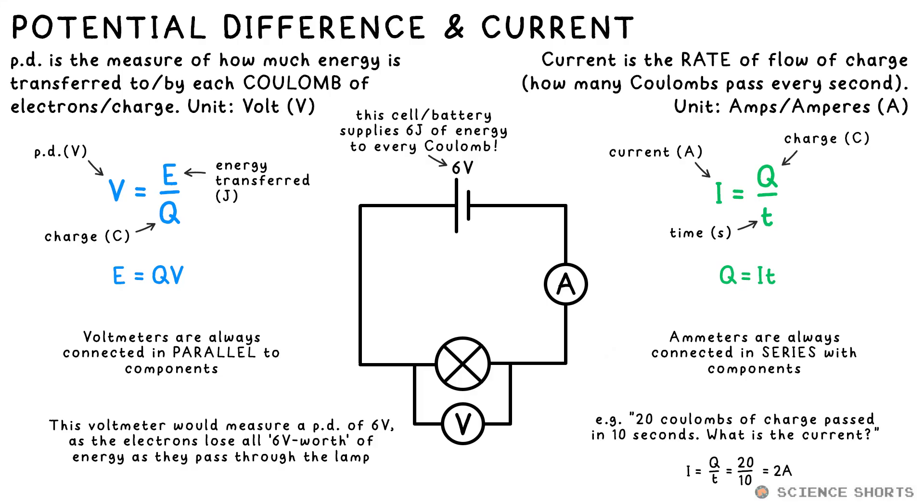We measure current with an ammeter. Note that it's not ampmeter. Unlike a voltmeter, it must go in series. This means in line.